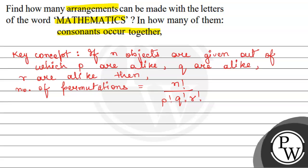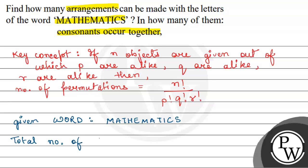We use this formula so that we avoid overcounting. The given word is 'mathematics': M-A-T-H-E-M-A-T-I-C-S. The total number of letters is 11. We have 2 M's, 2 A's, and 2 T's.